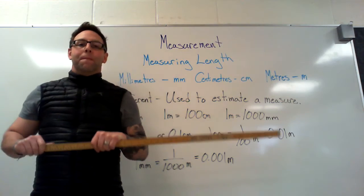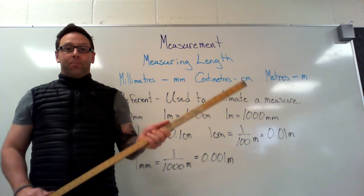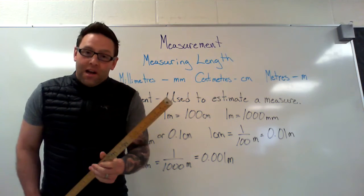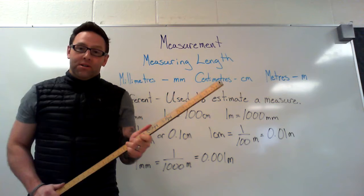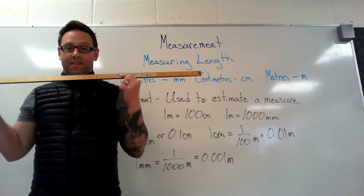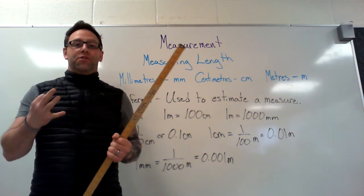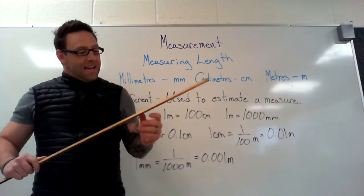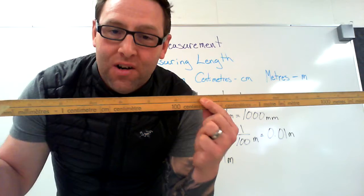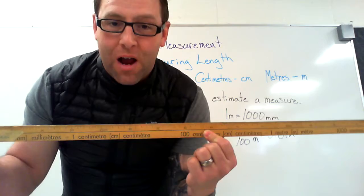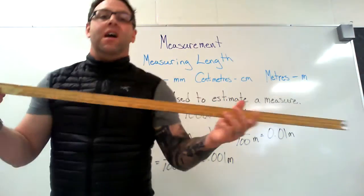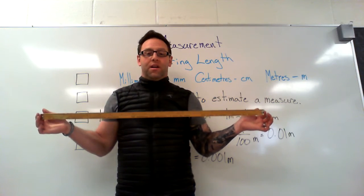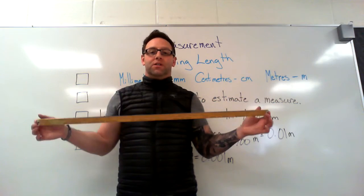Now you're looking at your ruler and thinking, what are all those little lines on there? Those little lines are millimeters and centimeters. If you've got a meter stick, you've got all three units of measure we're going to talk about today. The tiny little lines are millimeters, the ones with numbers are counting up in fives of centimeters, and the whole stick is a meter stick — so we've got everything from millimeters to centimeters to meters.